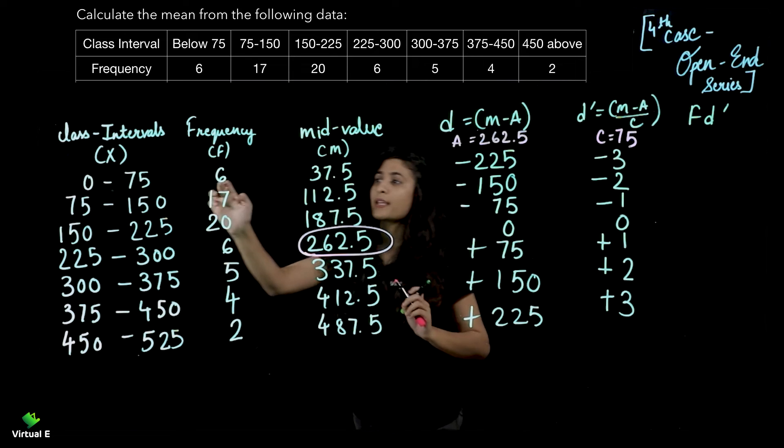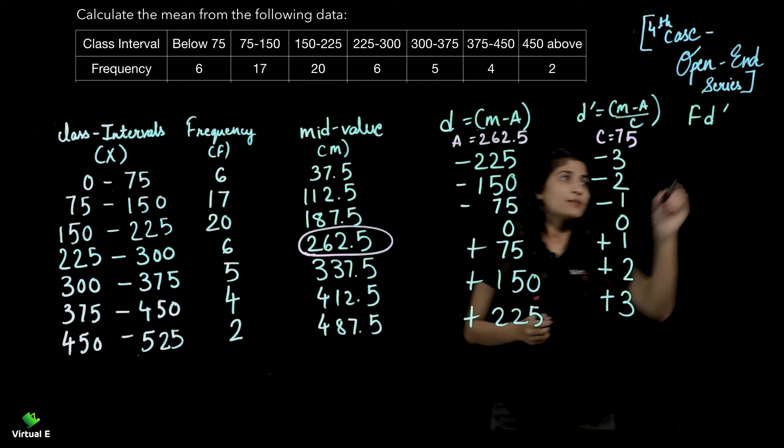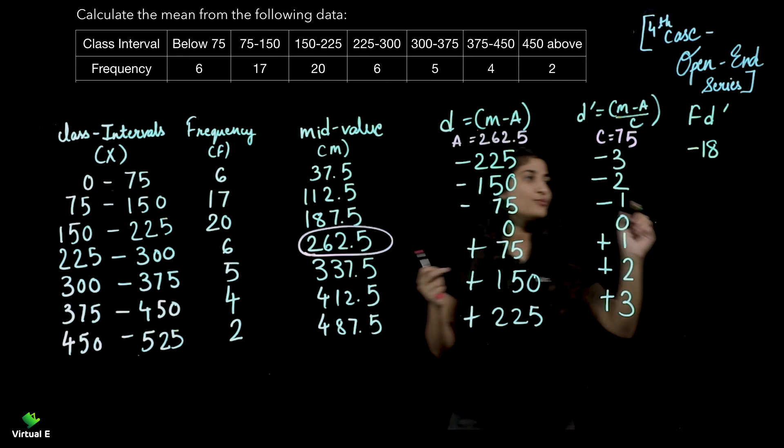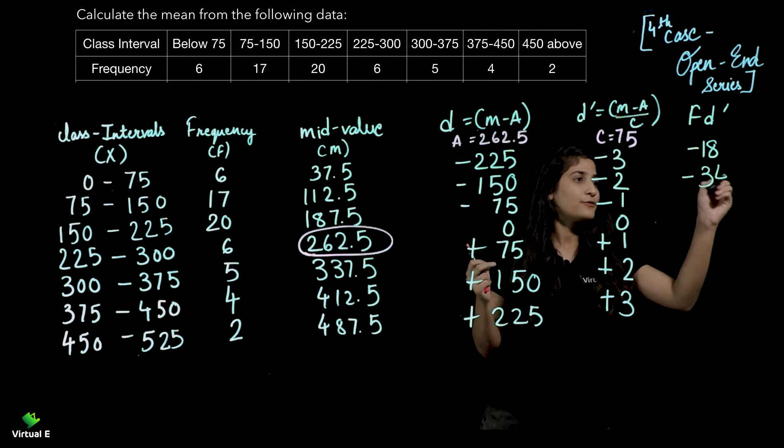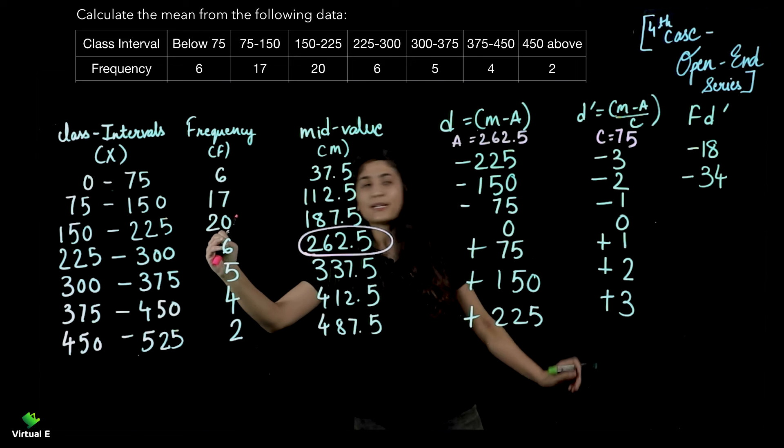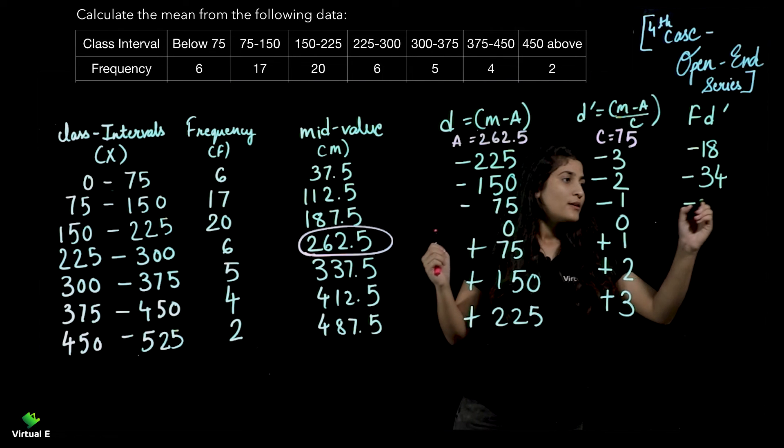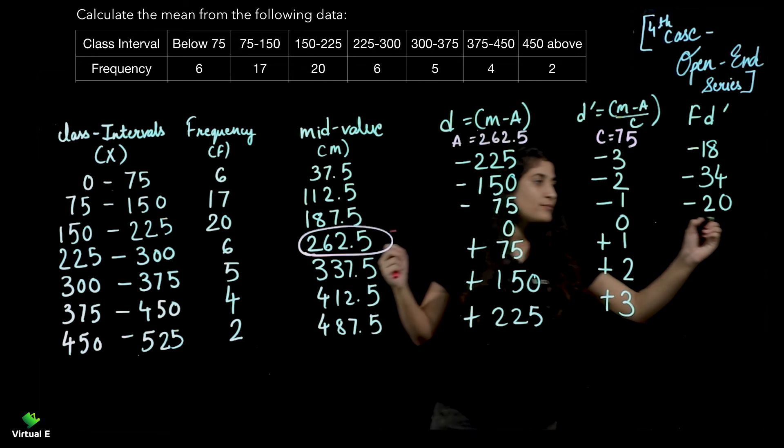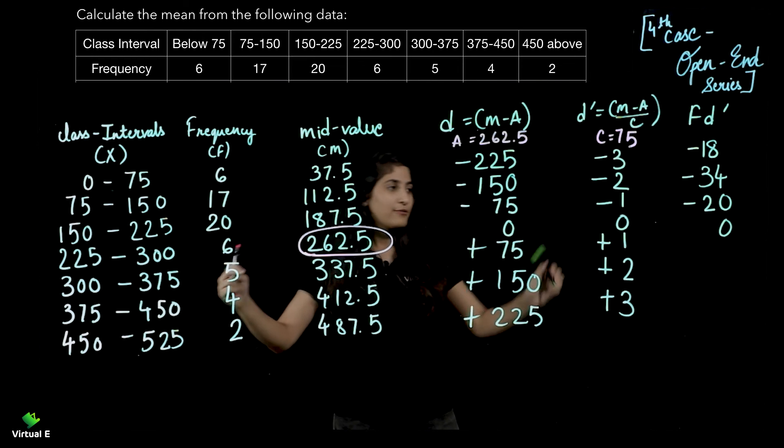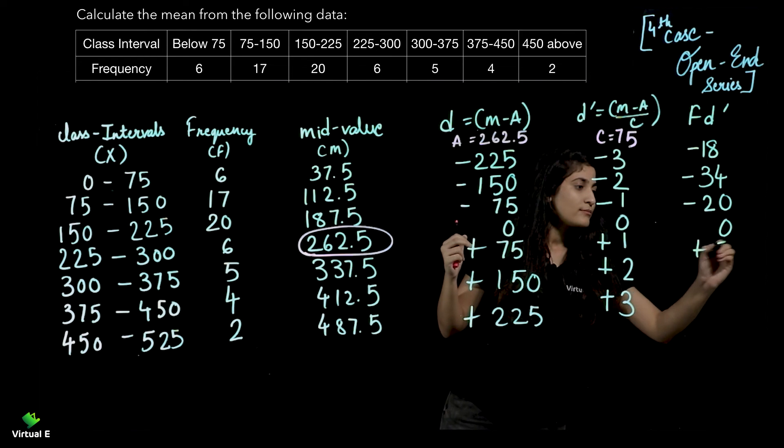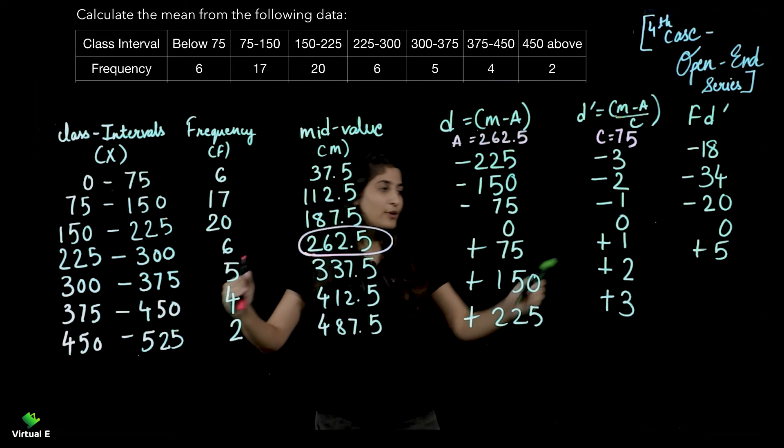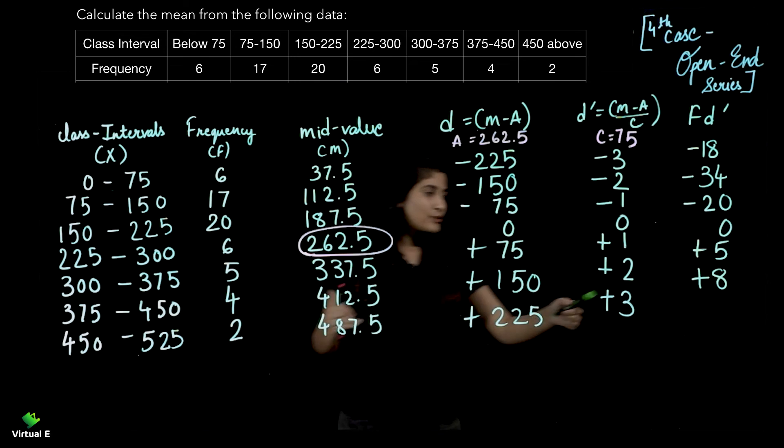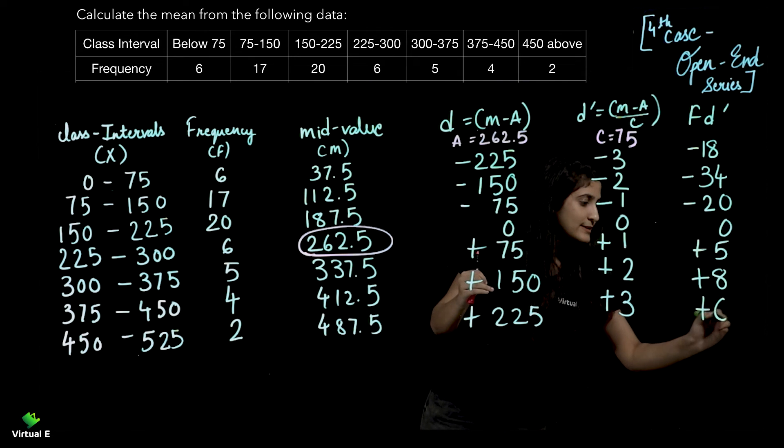Now 6 into -3, that is minus 18. 17 into minus 2, that is minus 34. 20 into minus 1, minus 20. 6 into 0, 0. 5 into plus 1, plus 5. 4 into 2, plus 8. And 2 into plus 3, plus 6.